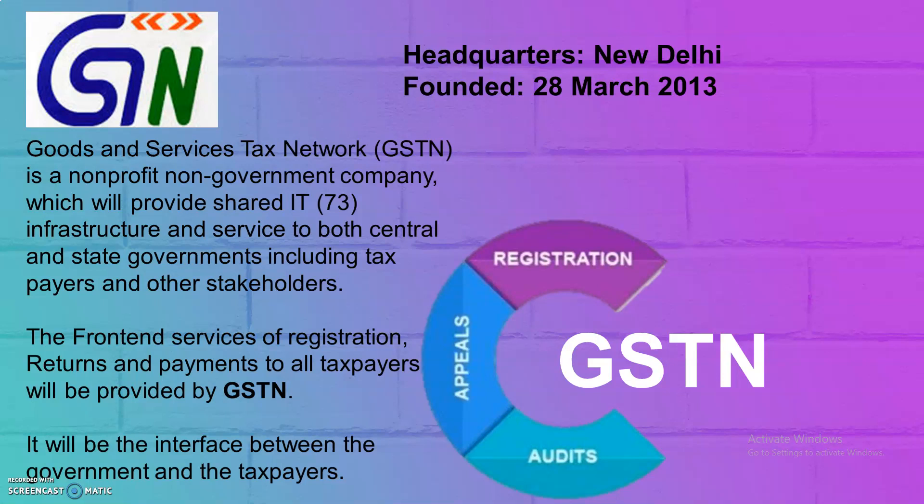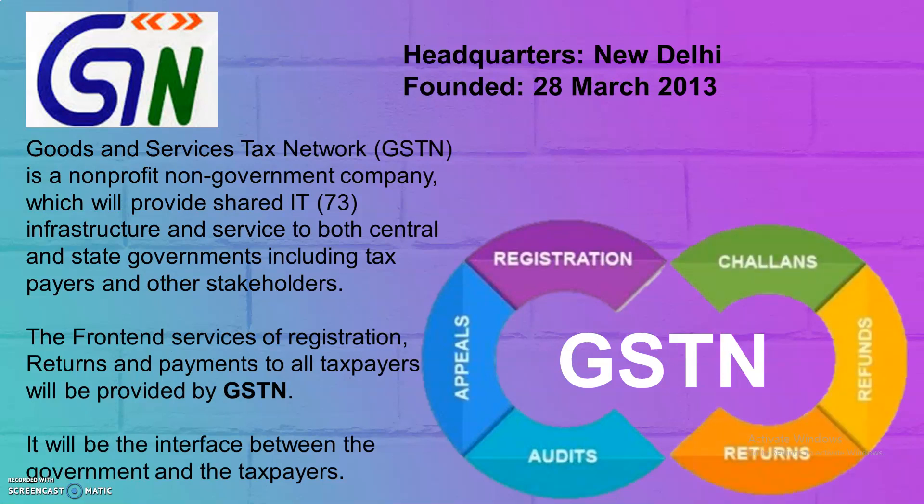GSTN acts as an interface between the government and the taxpayer, working as a mediator. At the top is Infosys, working as the Managed Service Provider, and under that, 73 IT companies work hand-in-hand with the government, helping taxpayers connect with the government.